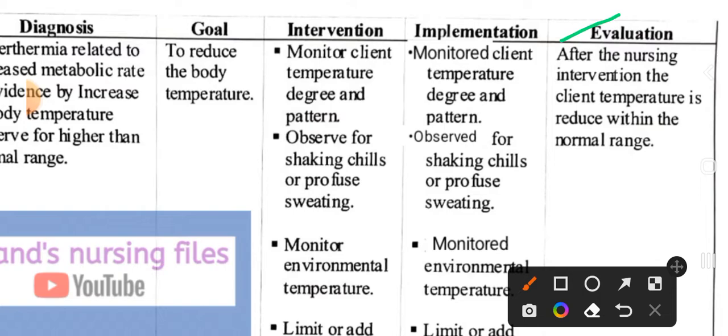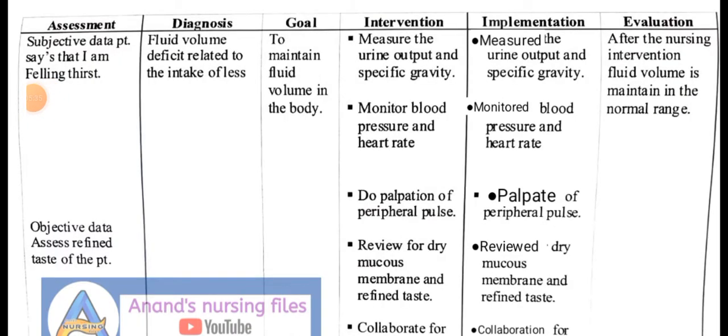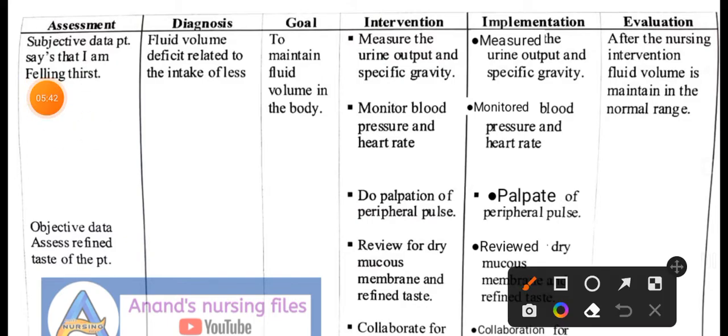Next, we look at nursing diagnosis number two of this nursing care plan on fever and hyperthermia. The second nursing diagnosis is: Fluid volume deficit related to inadequate intake. The patient's fluid volume is decreasing because they are not taking adequate intake. The first step is nursing assessment.